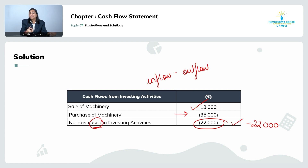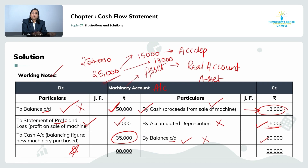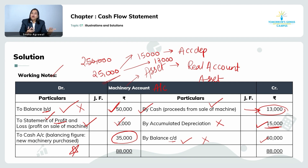As for the profit of 3,000 — I credited it to the profit and loss account. Since it is a non-operating item, when preparing the operating activity, I will deduct it. Under this question, we have understood how to calculate cash flow from the investing activity.